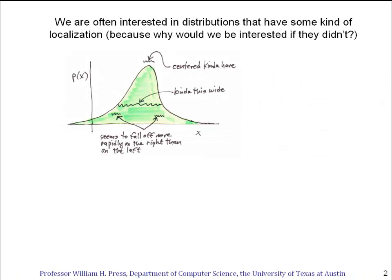We're often interested in distributions that have some kind of localization to them. For example, I've drawn a possible distribution of some quantity x here, and we can see that the most probable value of x is kind of centered here, and our knowledge about x is kind of this wide. We can also see further properties, such as it looks like the probability of x falls off more rapidly here on the right than it does on the left here.